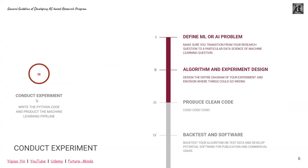Next, we have milestone three: actually conducting the experiment. This means you want to define the ML or AI problem and write the algorithm. In the end, the highlight is to write the code — clean code that allows you to backtest and potentially provide some sort of software. Based on my experience, most students can pass steps two, three, and four fairly easily if step one is well-defined. If step one is not well-defined, go back to milestone two and redefine what the problem is. Sometimes a question can be interesting from a humanities perspective but may not be a machine learning problem.